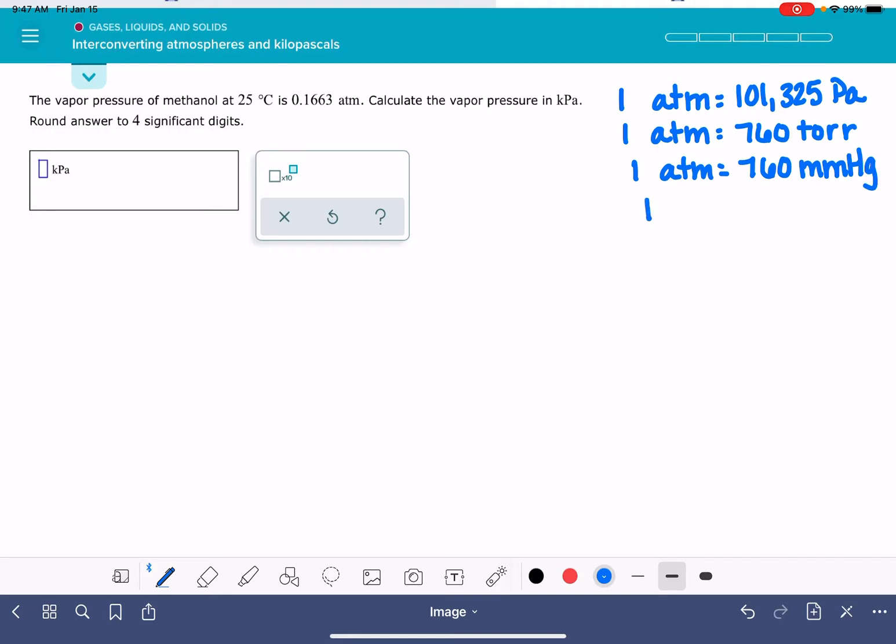And one atmosphere is also equal to 760 millimeters of mercury, which means that one torr is equal to one millimeter of mercury. And last but not least, one kilopascal is equal to 1,000 pascals.